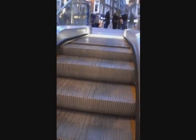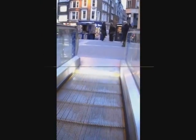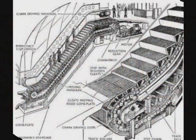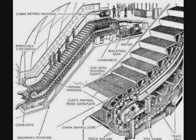The top platform contains the motor and the main drive gear, while the bottom holds the step return sprockets. In addition, the platforms contain a floor plate and a comb plate. The floor plate gives room for passengers to stand before they step onto the moving stairs. This plate is flush with the platform, and the comb plate is the piece between the stationary floor plate and the moving stairs.